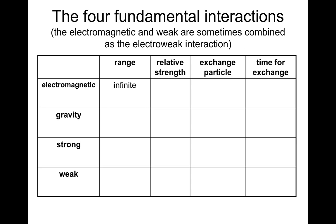So electromagnetic range — electromagnetic has infinite range. Let's say its relative strength is 1, so we're going to compare gravity, strong, and weak to the electromagnetic force. The exchange particle for the electromagnetic force is a photon. Time for exchange is 10 to the minus 18 seconds, which obviously is incredibly small.